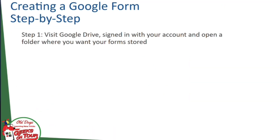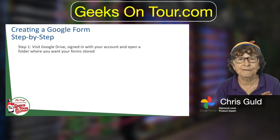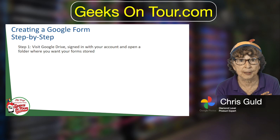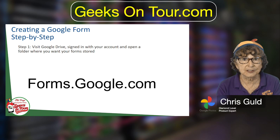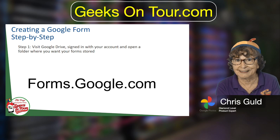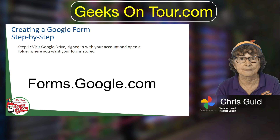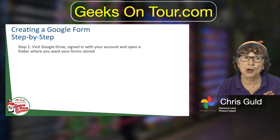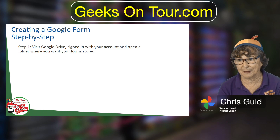Creating a Google Form step by step. The first step is to visit Google Drive and open the folder where you want your forms to be stored. Now there are other ways — Google Forms is forms.google.com, just like every Google product is product.google.com, and that takes you straight to Forms. But when you create one there, it's going to go to your Drive but not in any folder. So I really like this method.